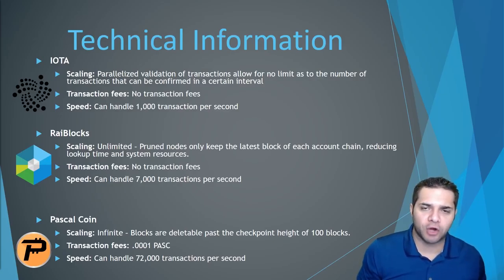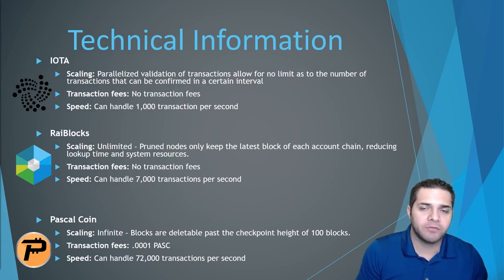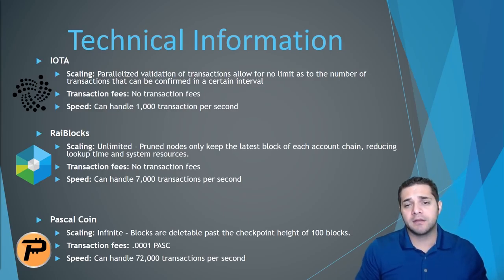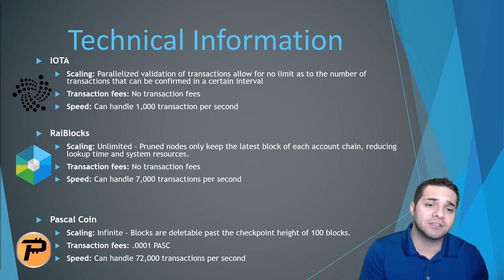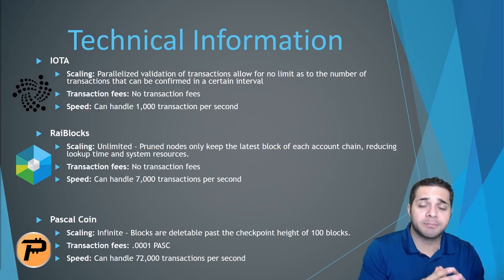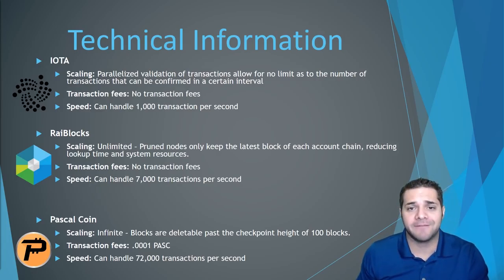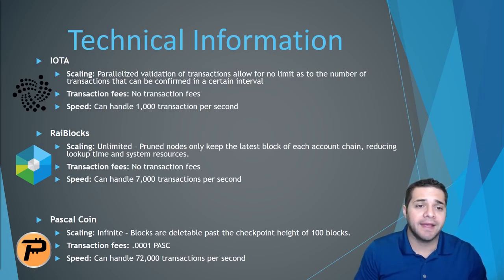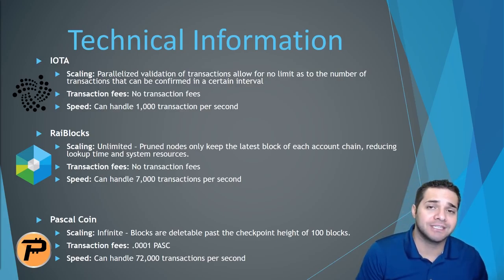Now let's dig a little deeper and compare their scaling, transaction fees, and speed. First, IOTA: their scaling uses parallelized validation of transactions, which allows for no limit on the number of transactions confirmed in a given interval. Transaction fees — there are none. Their last stress test showed they can handle up to 1,000 transactions per second. Next, RailBlocks: scaling is unlimited. They use pruned nodes to keep only the latest block of each account chain, reducing lookup time and system resources. Transaction fees — none, just like IOTA. Speed: they can handle up to 7,000 transactions per second.